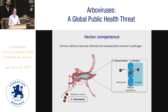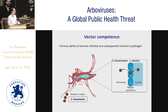Vector competence is defined as the intrinsic ability of a mosquito to become infected and subsequently transmit a pathogen. A mosquito becomes infected when it engorges on the blood of a viremic person. The virus first infects the digestive tract before disseminating through the rest of the body until it reaches the salivary glands, where it can be re-inoculated into the next host. In vector competence studies we refer to three sequential steps: midgut infection, dissemination from the midgut, and then transmission by release in the saliva.